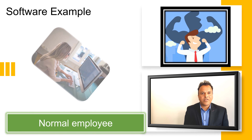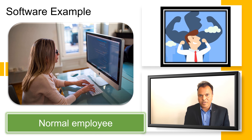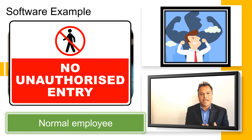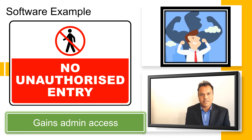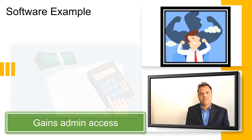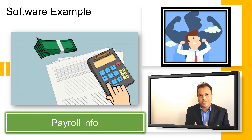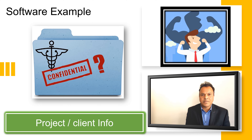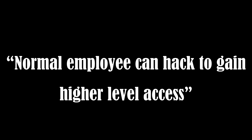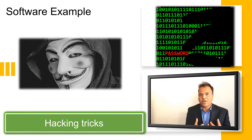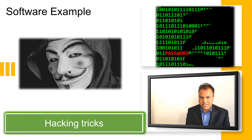In software applications, a normal employee could gain admin-level access to view bonus information, payroll data, restricted projects, or pricing information they should not see. This can be done by manipulating URL parameters or injecting unexpected input into a field that was not properly secured. This can result in a very costly situation — potentially millions in losses for the company.